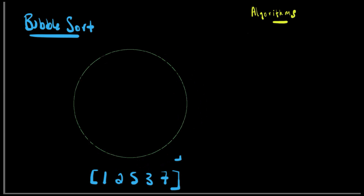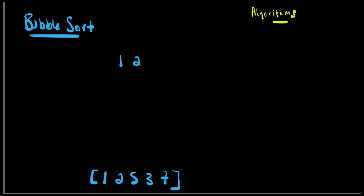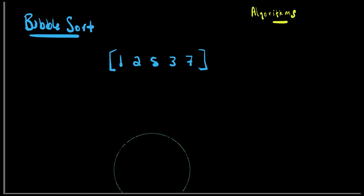So we're going to start with one, two, five, three, and seven. Now we're going to go back to the right and compare the last two numbers: three and seven. Is seven less than three? No. So we're going to move over to the next.